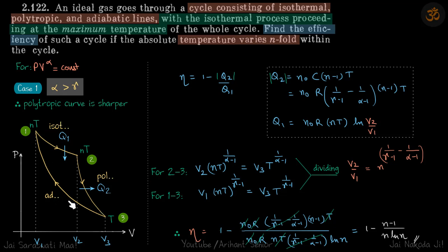So the efficiency of the cycle does not change regardless of the assignment. Whether this curve is polytropic and the other adiabatic, or vice versa, the efficiency of the cycle is the same.